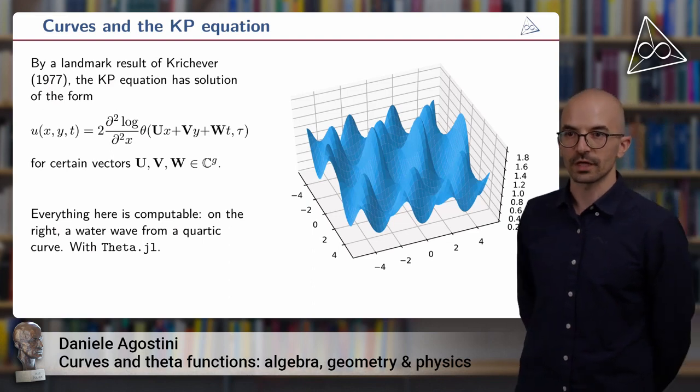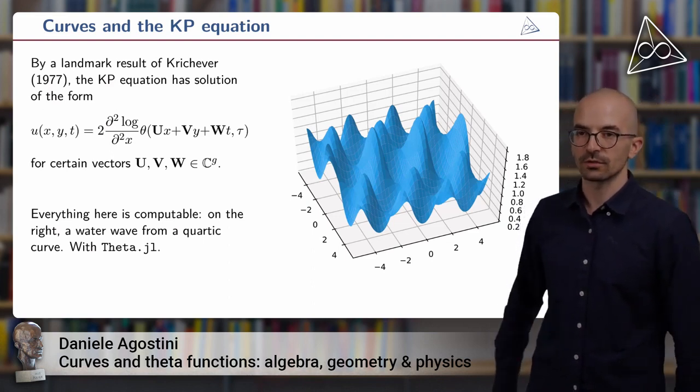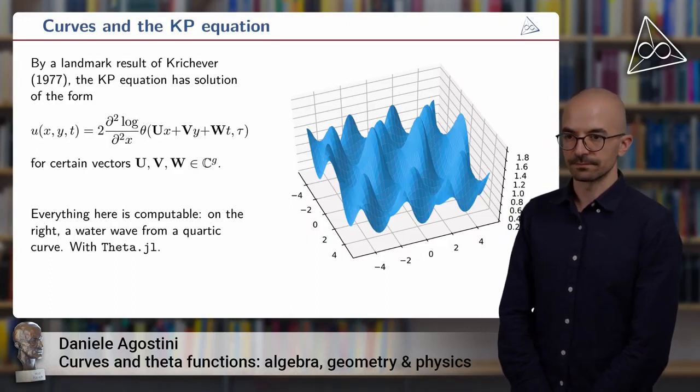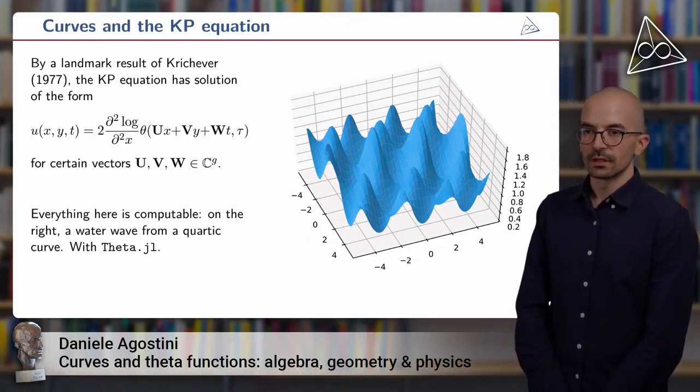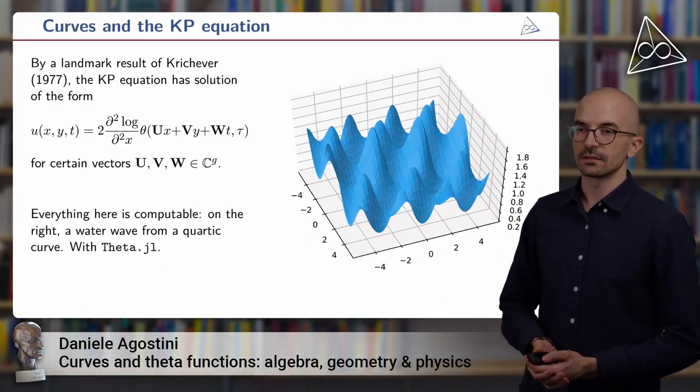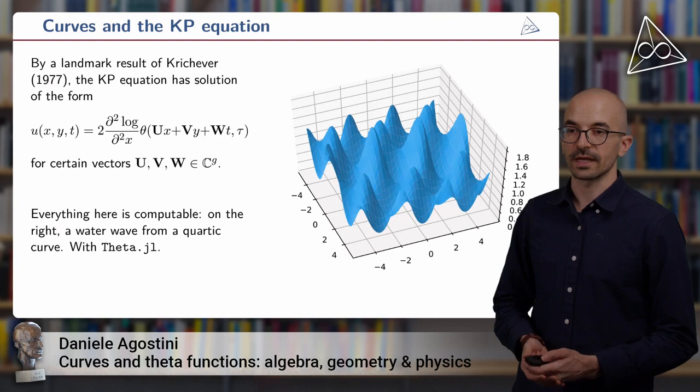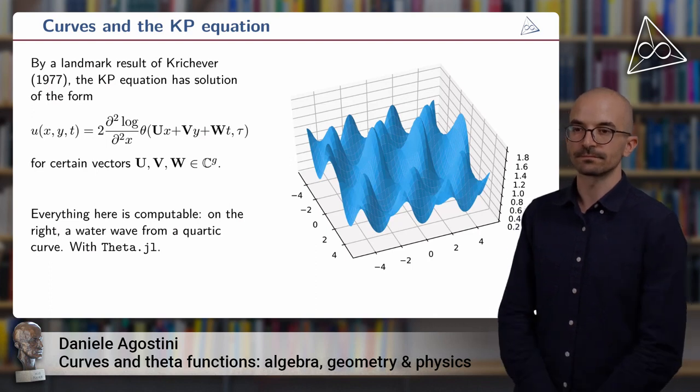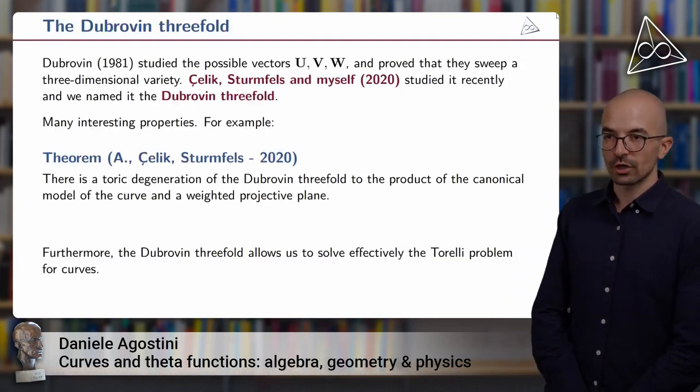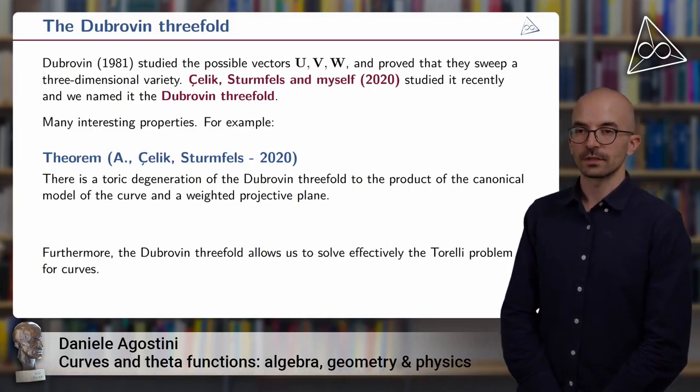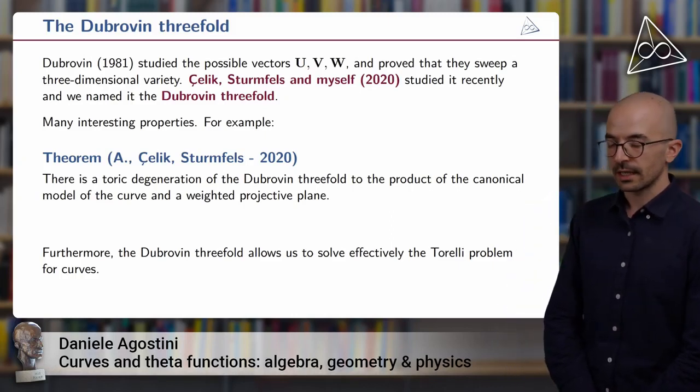So it was a bit of introduction to the subject of the KP equation. Now let us come to some of the results that we have obtained. So first, we see here that from a specific curve, the KP solutions are classified by the vectors u, v, and w. Dubrovin studied the possible vectors u, v, and w that will solve the KP equation and proved that they sweep a three-dimensional variety.